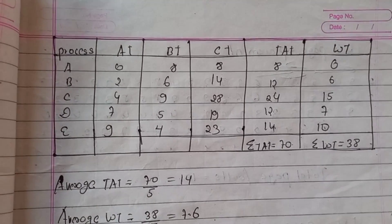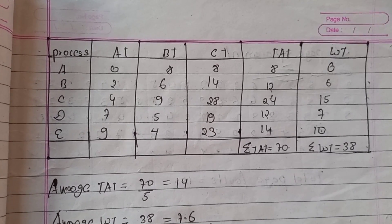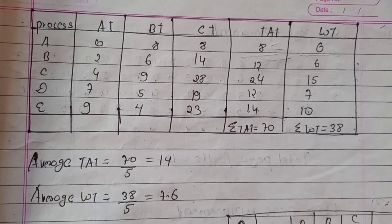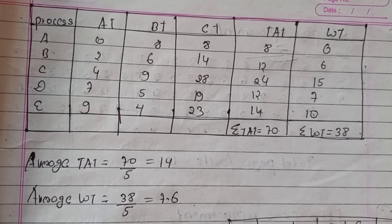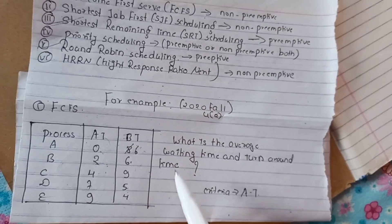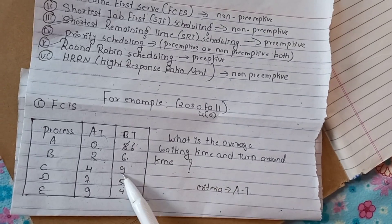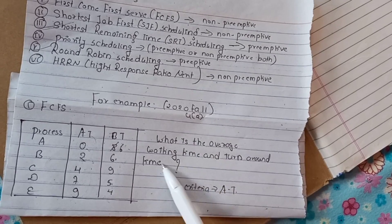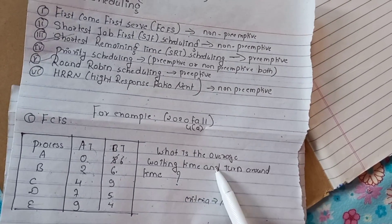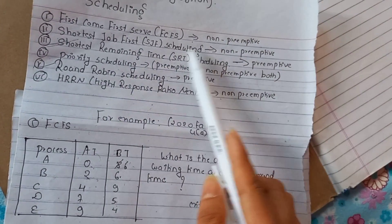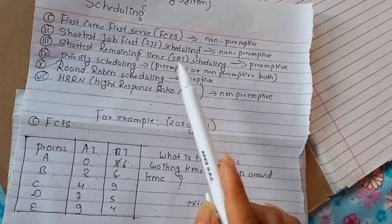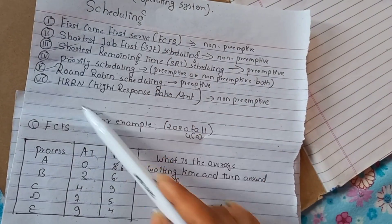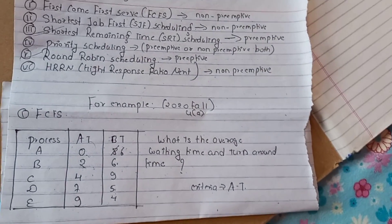This is the final completion time and turnaround time using HRRN scheduling. We use the same formula: average total turnaround time and average waiting time. In summary, we covered scheduling using First Come First Serve, Shortest Job First, Shortest Remaining Time, Round Robin scheduling, and HRRN — Highest Response Ratio Next.